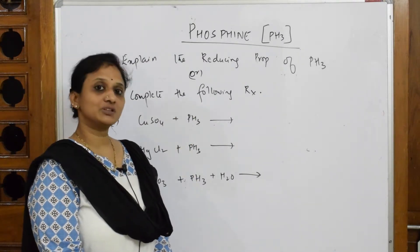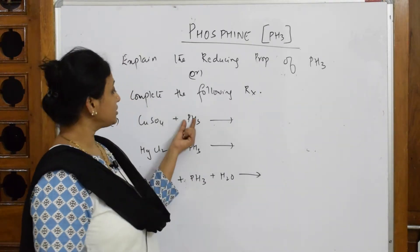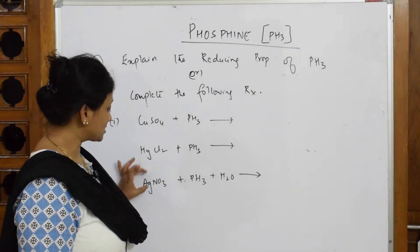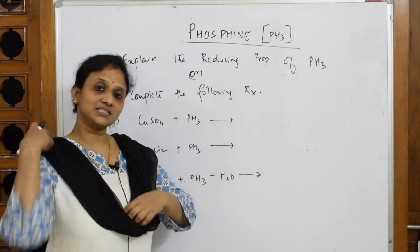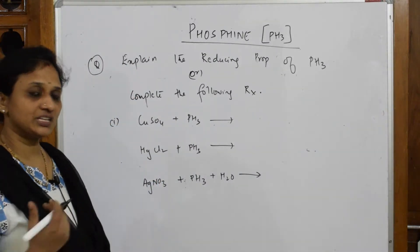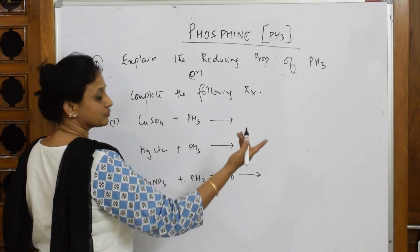Phosphine, if I have to speak about its reducing nature, let us see how it is going to convert. Whenever you find in the question paper phosphine along with the sulfate or chloride or silver nitrate, it has its reducing property. It is going to convert the sulfates into their phosphides.